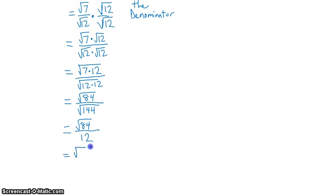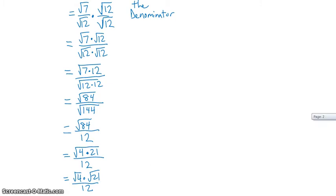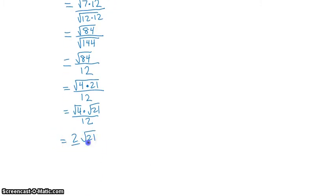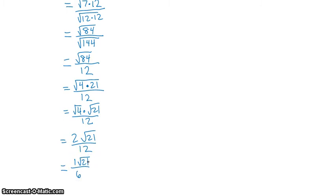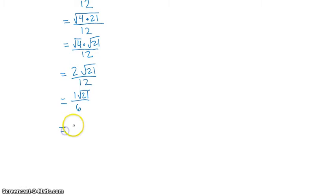But 84 can be broken down into a perfect square times another number: 4 times 21. We distribute the square root to the 4 and to the 21, which turns into 2 square roots of 21 over 12. Now I have a 2 and a 12 both outside the square root. Simplifying 2 twelfths into 1 sixth and keeping the square root of 21, my final answer is the square root of 21 over 6.